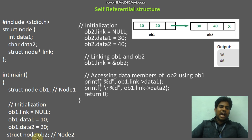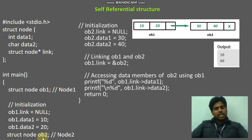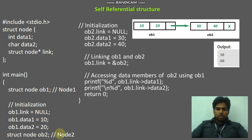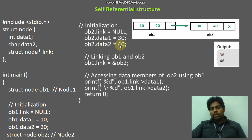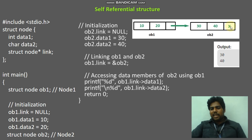Now, I am going to create another node. This is OB2. Struct node OB2 — it is another structure variable. Struct node is the structure name, OB2 is the structure variable — the second structure variable. Using this, I am going to create another node. Separate memory was allocated for OB2. OB2 dot data1, I am allocating value 30. OB2 dot data2, I am allocating value 40. Now, I am making OB2 dot link as null first, because I am going to interconnect and link these two nodes.